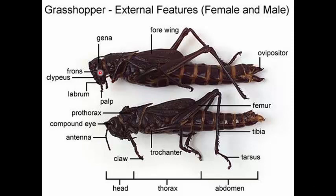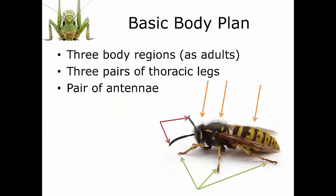Anteriorly you have the head, in the middle the thoracic region with the wings and legs, and posteriorly the abdomen and the sexual organs or ovipositor in females. Remember that there are a few things that make an insect an insect. First, there are three body regions in the adult form: the head anteriorly, the thorax in the middle, and the abdomen posteriorly.